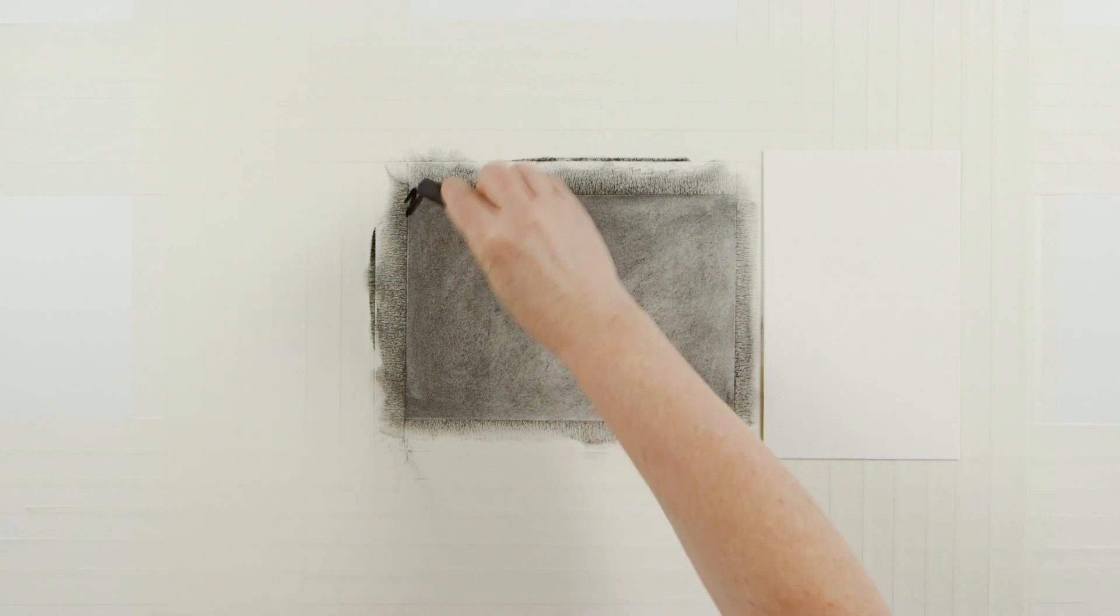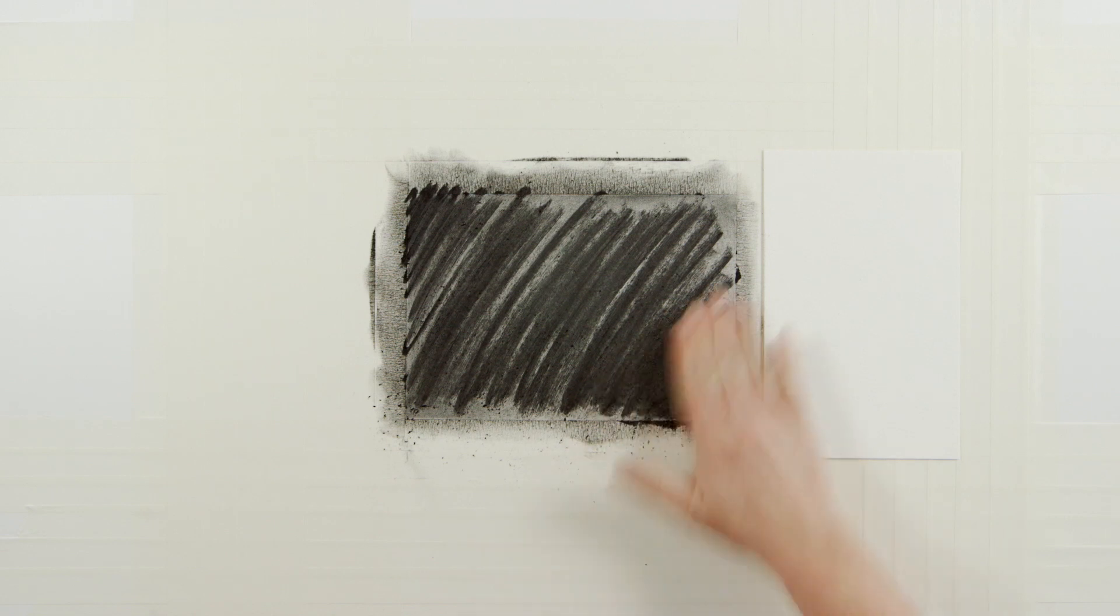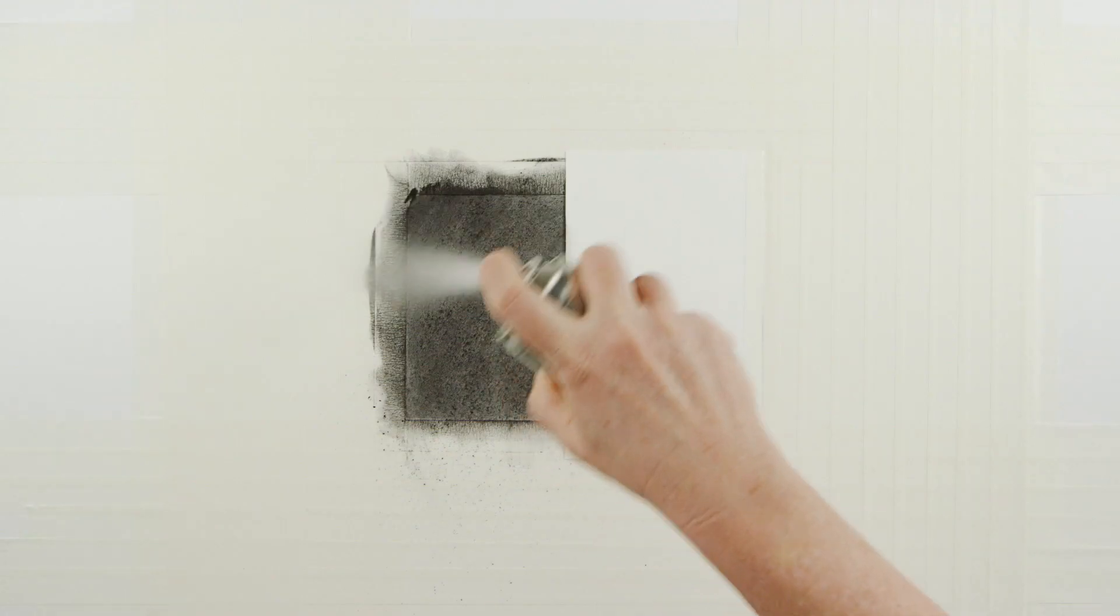Now I'm going to add another layer of charcoal. I'll mask half the area with a flap of paper and spray fix again.